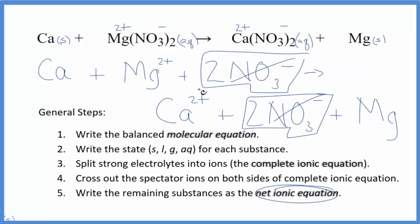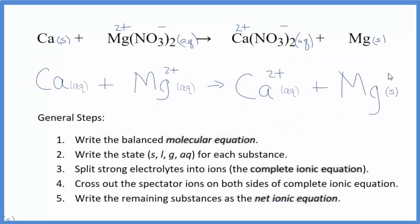I'll clean this up, write the states in, and we'll have our net ionic equation. And this is the balanced net ionic equation for Ca plus Mg(NO3)2. You'll note that we have this 2+ charge on this side and a 2+ charge on this side. So charge is conserved.